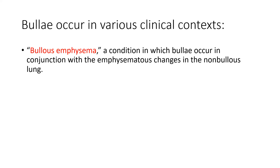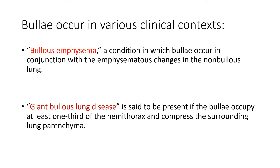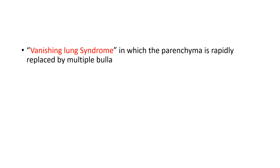Bullae occur in various clinical contexts. Bullous emphysema is the condition in which bullae occur in conjunction with the emphysematous changes in the non-bullous lung. Giant bullous lung disease is said to be present when bullae occupy at least one-third of the hemi-thorax and compress the lung parenchyma. Vanishing lung syndrome is when the parenchyma is rapidly replaced by multiple bullae.